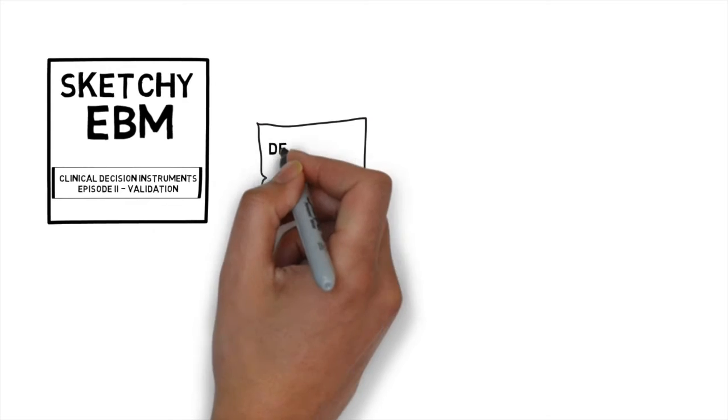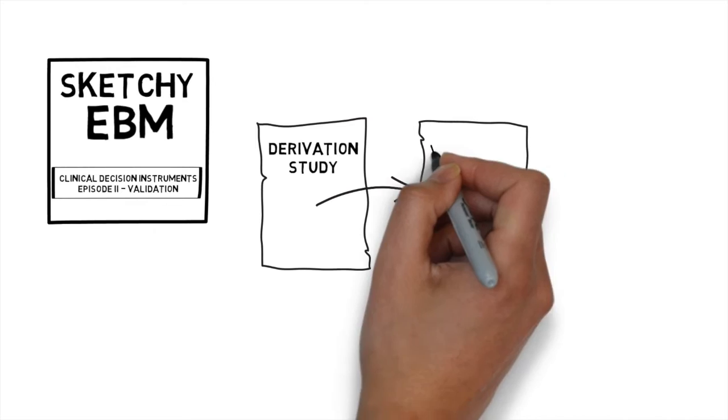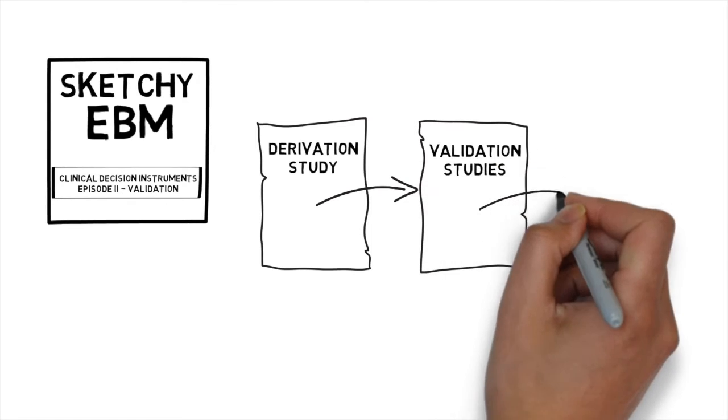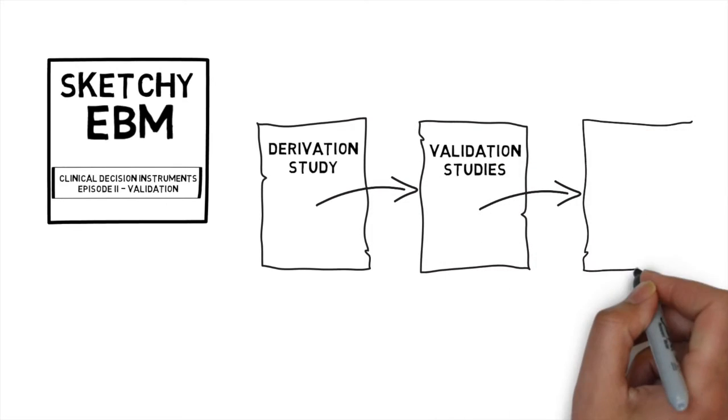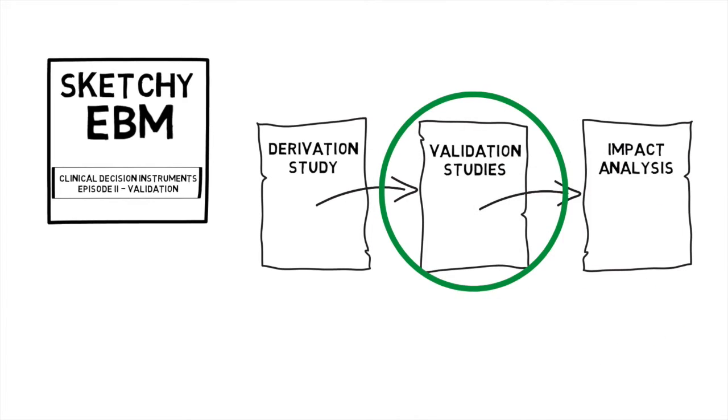You may also remember that there are three stages in the developmental process of a clinical decision instrument: the first being the derivation study which is followed by the validation studies which is then followed by impact analysis. And today we're talking about the validation studies.